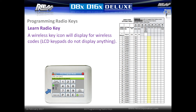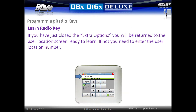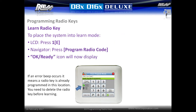On a Navigator keypad, a wireless key icon is displayed for radio codes. On LCD keypads, nothing is displayed. To check a radio code on an LCD keypad, simply toggle the extra options and check that 5e is enabled. If you have just closed the extra options, you will be returned to the user location screen and will be ready to learn a radio key. Otherwise, enter the user location number to begin.